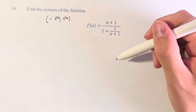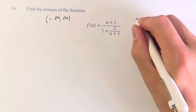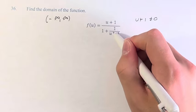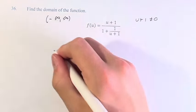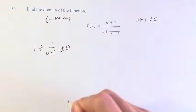Notice we have two fractions. We have 1/(u+1), which means u+1 cannot equal zero. And we have (u+1) over this whole denominator, which means the whole denominator, 1 + 1/(u+1), also cannot equal zero.